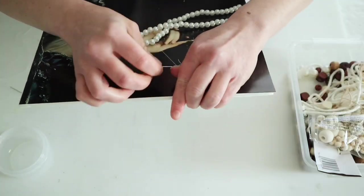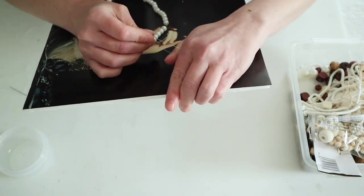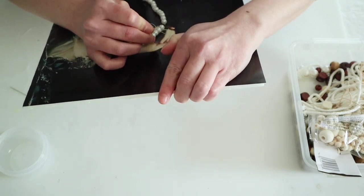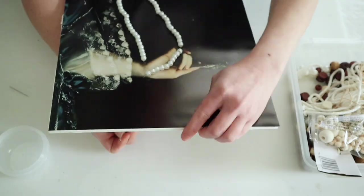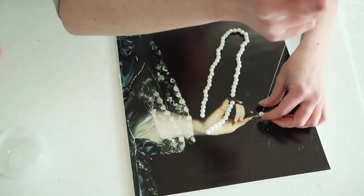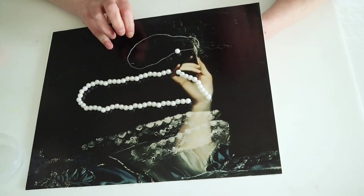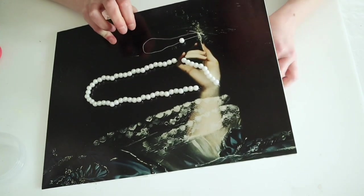Now I did end up adding an extra stitch right in the center of her palm to kind of make it look like the pearls were being cupped in her hand. And finally, I sewed one single pearl onto the top of the oyster.